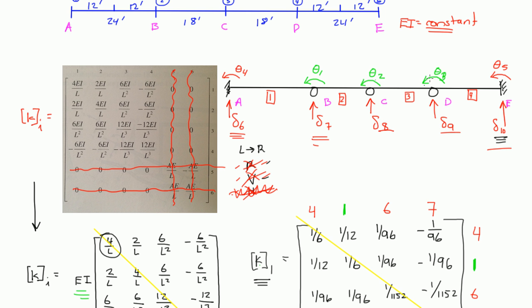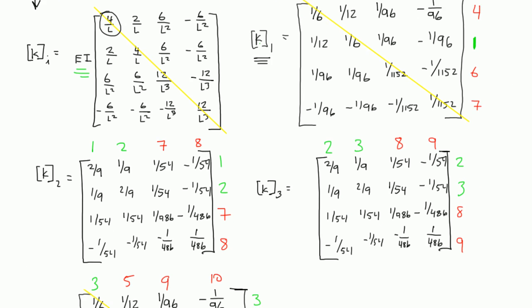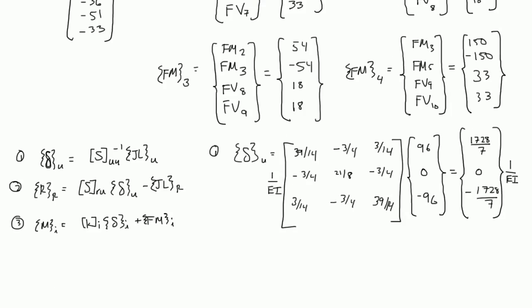The negative means this is just going the other way. So theta 3 was going counterclockwise, and now it's actually going clockwise. Angular deformations are in radians, so 1728/7 times EI is theta 1 — the deformation happening at theta 1. That means this joint is going to rotate counterclockwise, so our slope here is going to look something like that. Theta 2 was 0, so the slope looks like this, and theta 3 was going the opposite direction, so the slope looks something like that.